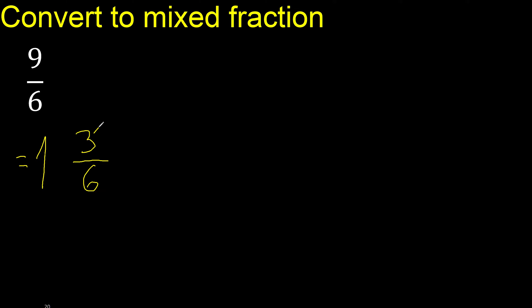Can be simplified because it can be divided by the same number. Divided by 3. 3 divided by 3 is 1. 6 divided by 3 is 2. 1, 2, finish.